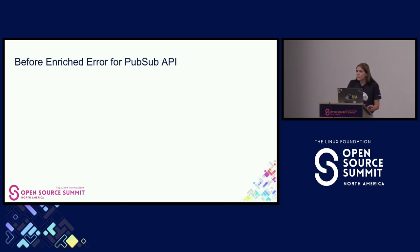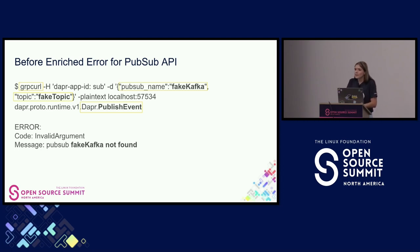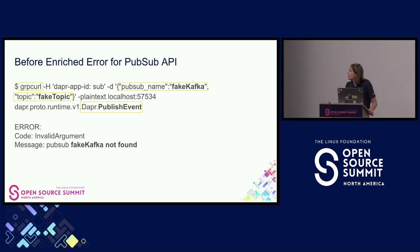Now let's take a look at a before enriched error for our pub sub API. Previously, if you were to run a gRPC curl using a fake Kafka and a fake topic against our Dapr publish event endpoint, you used to get this exact error. Of course, fake Kafka does not exist and neither does fake topic, so I'm forcing this very simple error. We get back invalid argument and 'pub sub fake Kafka not found.' This is pretty clear, but it's important to return back more actionable information to our users in a user-friendly way.